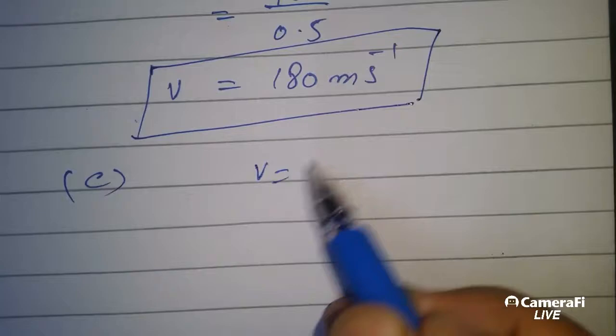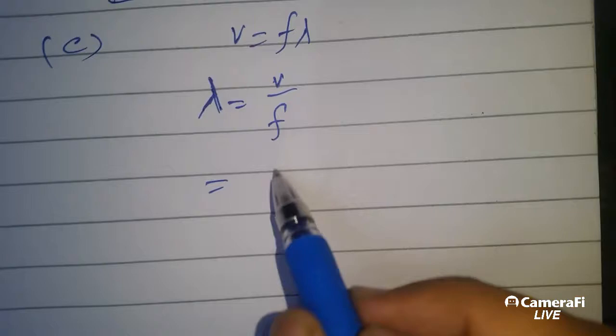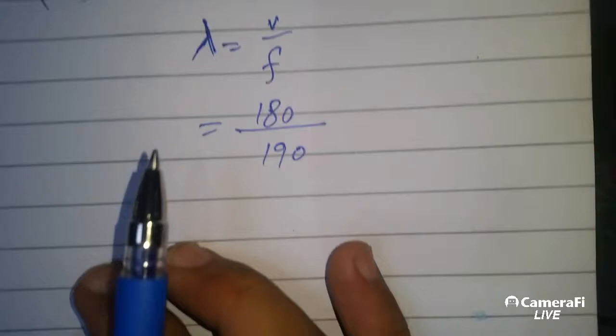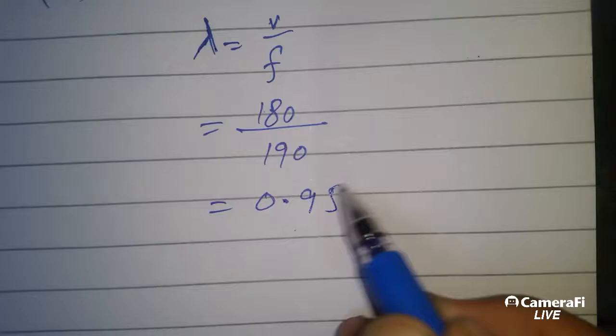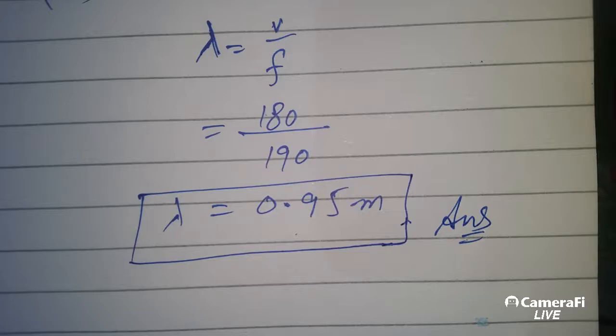V is equal to f lambda, and lambda is equal to v over f, which is equal to 0.95 m. That's it.